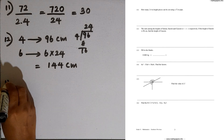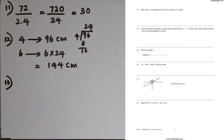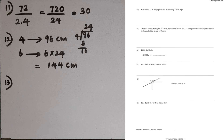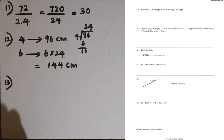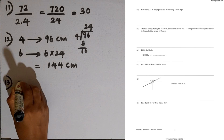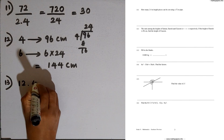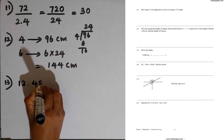Question number 13: 12,480 kilograms is equal to how many tons? To convert kilograms into tons, we divide by 1000. So the answer is 12.48 tons.